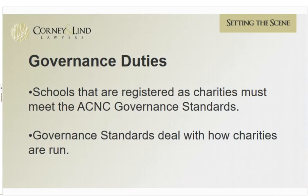Starting with governance duties: schools registered as charities must comply with the ACNC governance standards. These are a set of core minimum standards dealing with how charities are run, found in the ACNC regulations. Governors must be aware of and familiar with these standards. At a high level, they require charities to remain charitable, operate lawfully, and undertake their charitable work. Because these governance standards are quite high-level and not prescriptive, charities can decide exactly how they will comply.